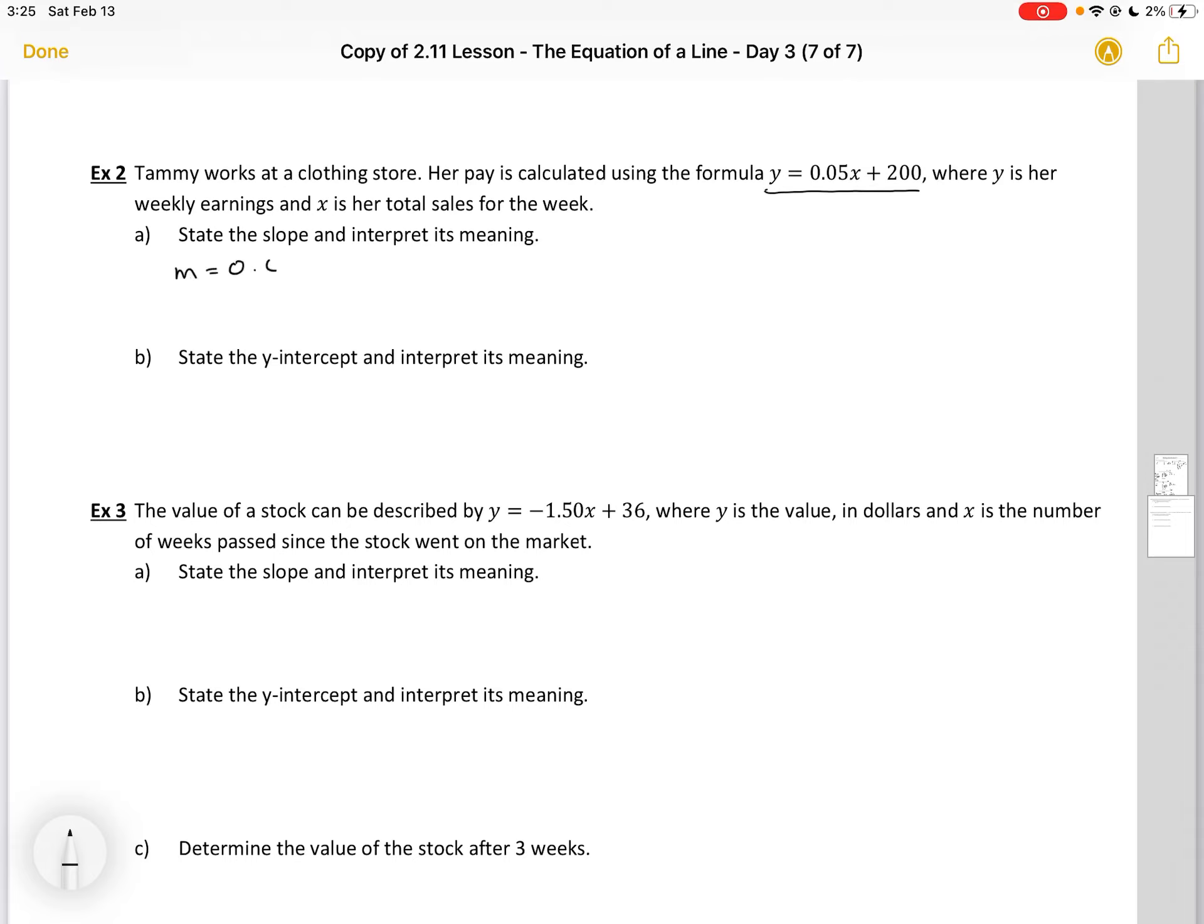Our slope, which is our m, is 0.05. And it's meaning, if x is my total sales per week, this is going to be actually Tammy's commission. What that says is that she gets 5% of her total dollars sold or total sales.